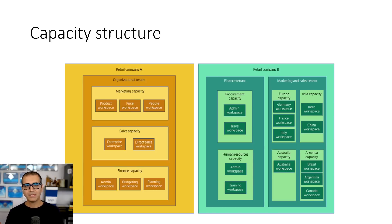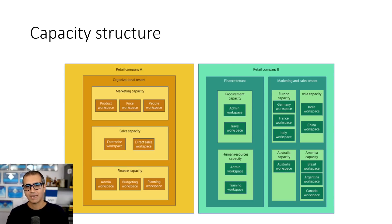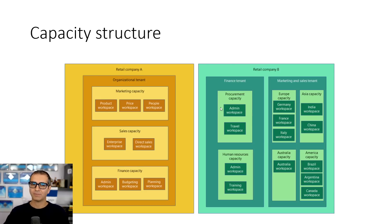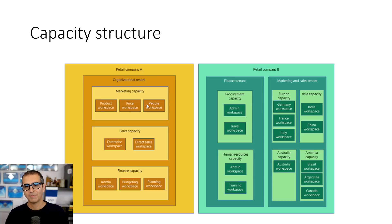To understand licensing, first you need to understand the capacity structure. We have three main capacity structures to understand. The first one is a tenant. An organization or a domain usually has one tenant, though it can have multiple. For example, retail company A has one tenant for the whole organization, while a larger retail company B might have multiple tenants — one for marketing and sales, another for finance, or even region-based. Under the tenant we have capacity, which is a set of resources. You can have multiple capacities under a tenant, such as sales, marketing, and finance.